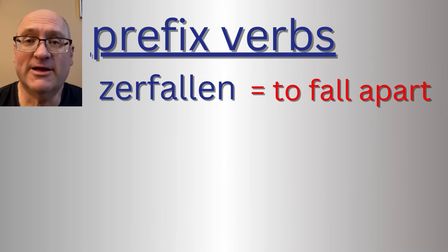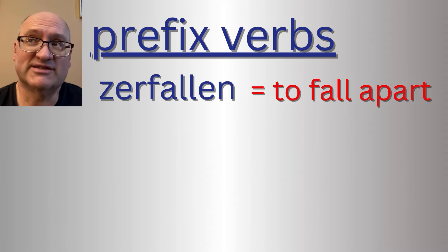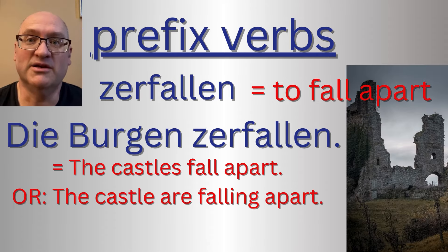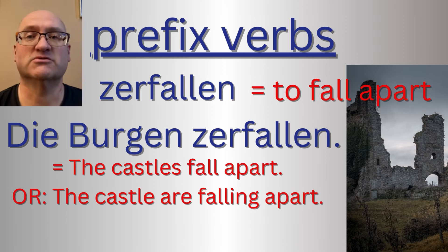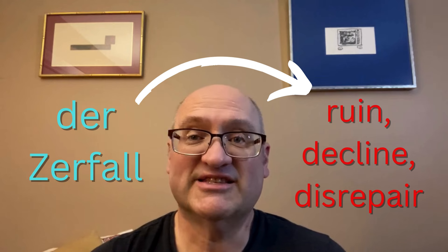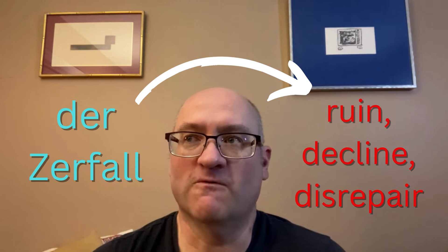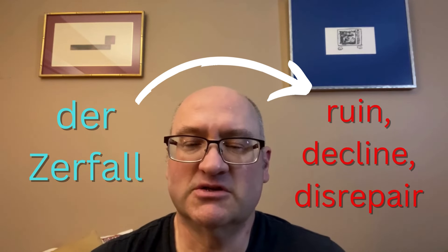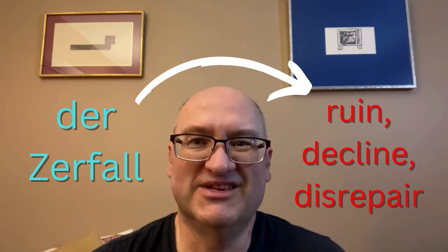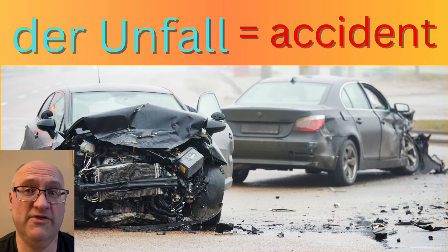The verb 'zerfallen' does not have a separable prefix. For instance, 'die Burgen zerfallen' — the castles fall apart or fall into disrepair. You can see how the 'zer' stays at the beginning of the verb. 'Der Zerfall' means ruin, decline, or falling apart — something that falls into disrepair, something that is no longer in use.